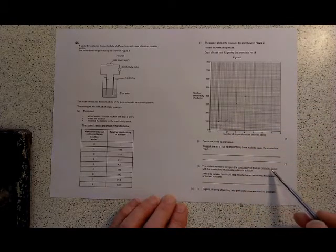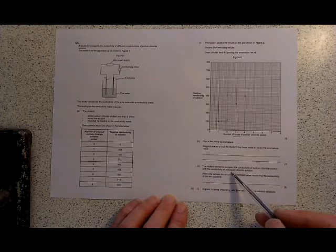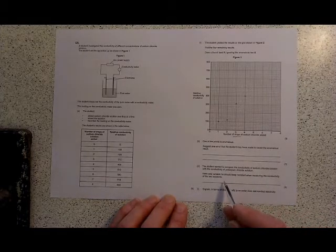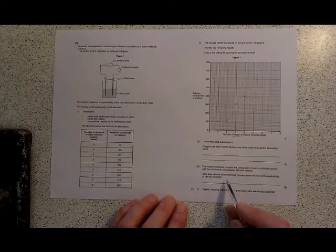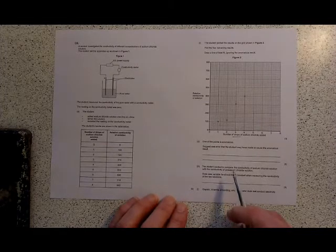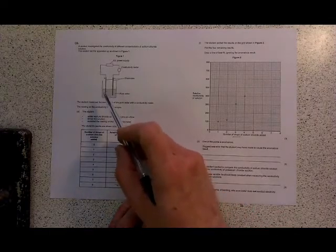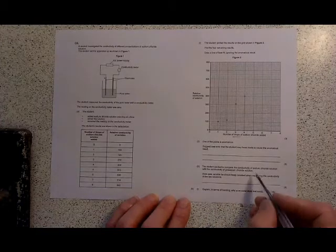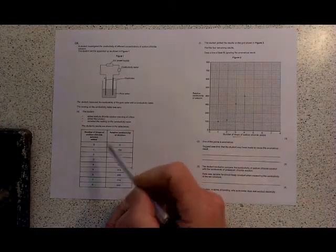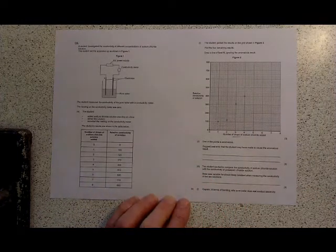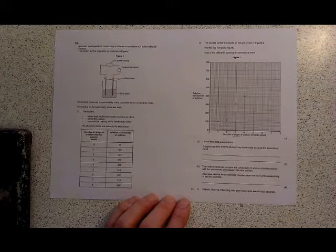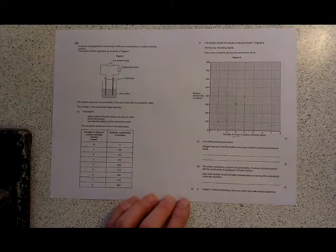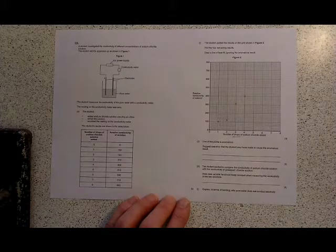The student wanted to compare the conductivity of sodium chloride solution with the conductivity of potassium chloride solution. State one variable he should keep constant when measuring the conductivity of the two solutions. You'd want to use the same volume of solution, so that the same depth of electrodes are submerged. You'd want to use the same concentration of your raw starting solution. You're adding one drop, two drops, three drops, four drops. You'd want to use the same concentration of that. A third thing, like with a lot of chemistry experiments, you'd want to use the same temperature. Because temperature will affect how quickly the ions can move, and that affects how well they conduct.